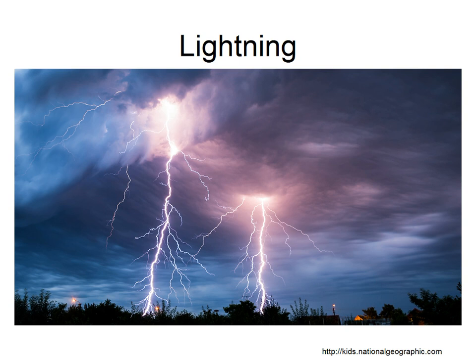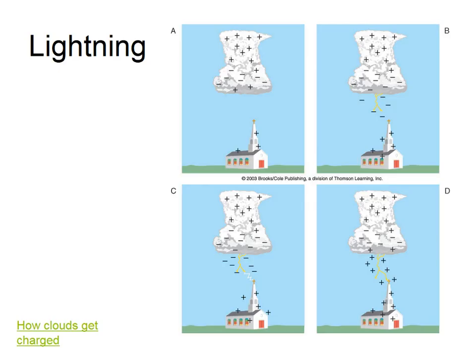This is an electrostatic discharge between the cloud or the cloud and the ground. So what creates these different charges? We're going to go through the formation of a lightning bolt. It all starts with the cloud — normally a cumulonimbus cloud — getting electrically charged. You see positives at the top and negatives at the bottom, and this video clip will show you how the cloud gets charged.